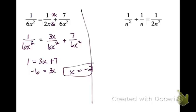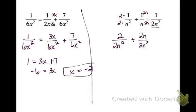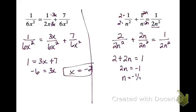On this next problem, looking at my denominators, the one I want to use as the LCD is 2n squared. So I want to get a 2 and an n squared in each denominator. On the first fraction, I just multiply top and bottom by 2. On the second fraction, I multiply top and bottom by 2n. So I get 2 over 2n squared plus 2n over 2n squared equals 1 over 2n squared. Setting my numerators equal, subtract the 2, divide by 2, I get n equals negative one-half.